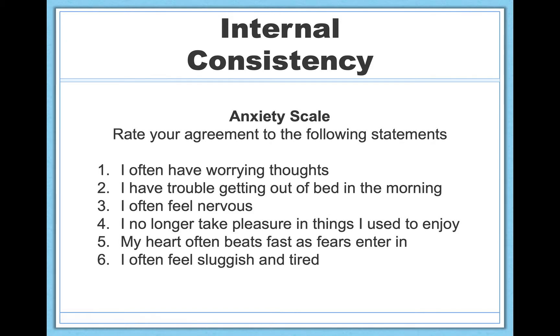So here's an example of an anxiety scale that I developed for the purposes of this video. Let's take a look at each of these items and kind of make a guess about what the internal consistency is going to look like. So item one is, I often have worrying thoughts. Item two, I have trouble getting out of bed in the morning. Item three, I often feel nervous. Item four, I no longer take pleasure in things I used to enjoy. Item five, my heart often beats fast as fear enters in. And item six, I often feel sluggish and tired.